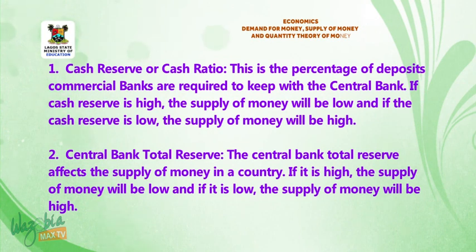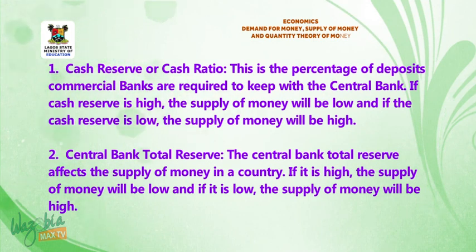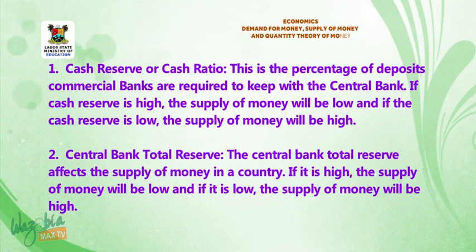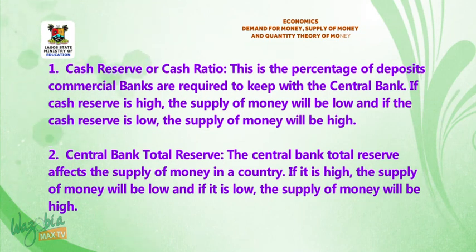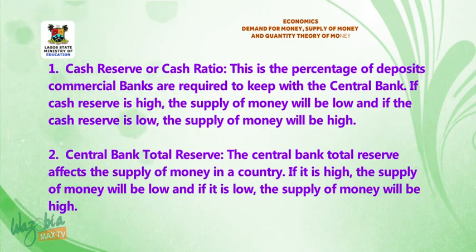Three: Central Bank total reserve. The Central Bank's total reserve affects the supply of money in a country. If it is high, the supply of money will be low, and if it is low, the supply of money will be high.